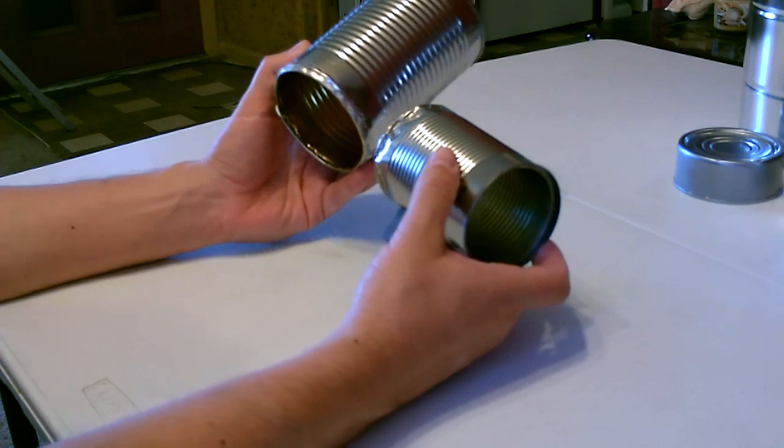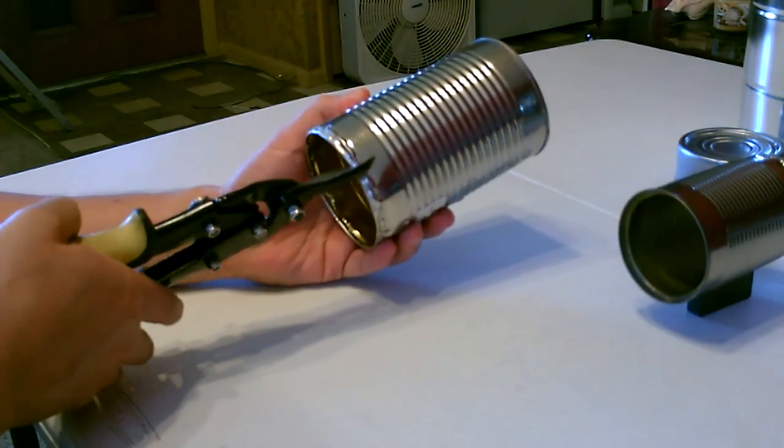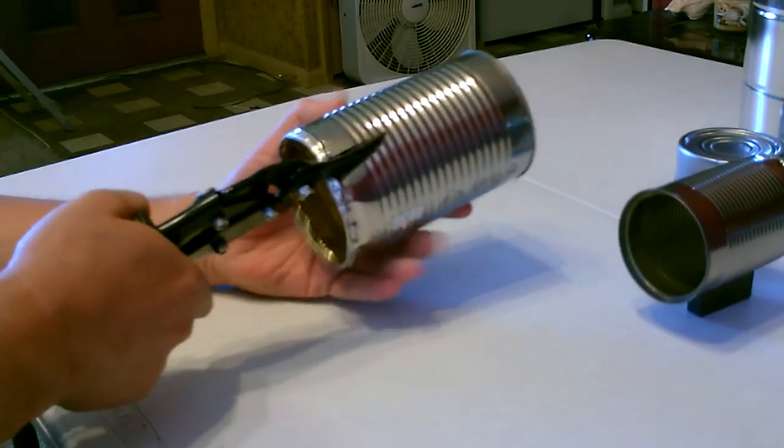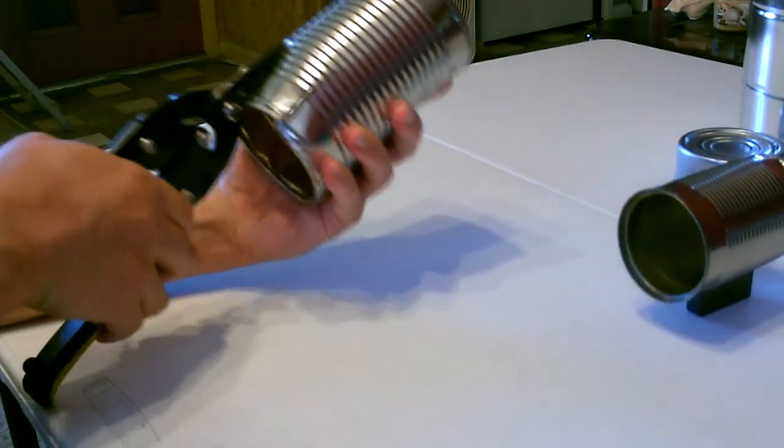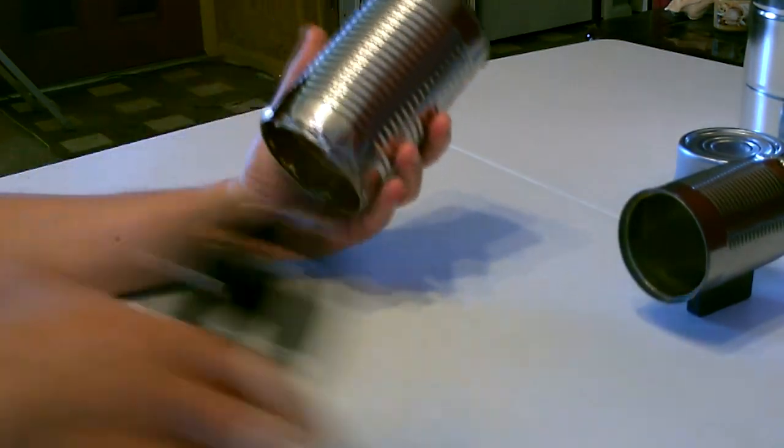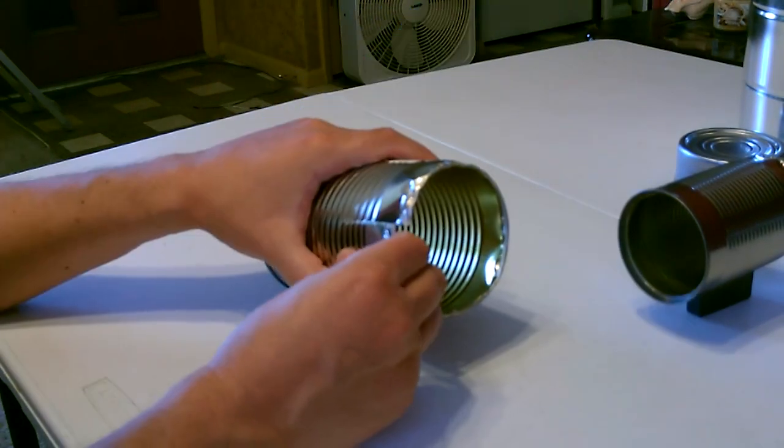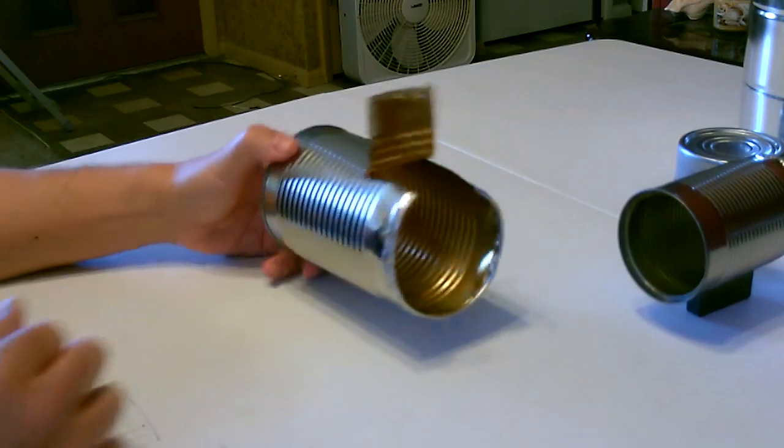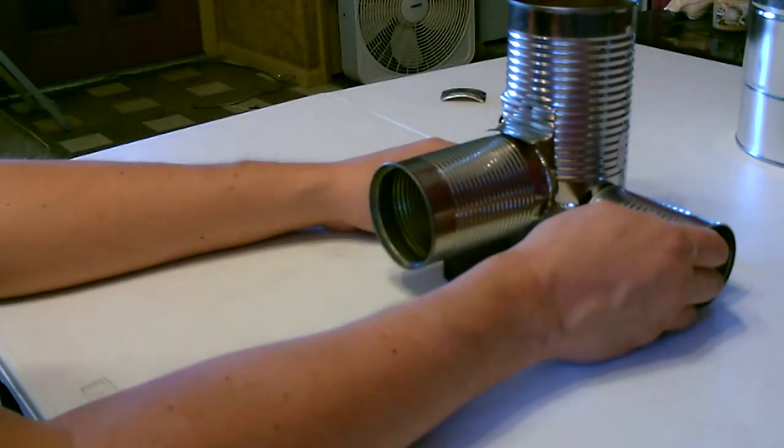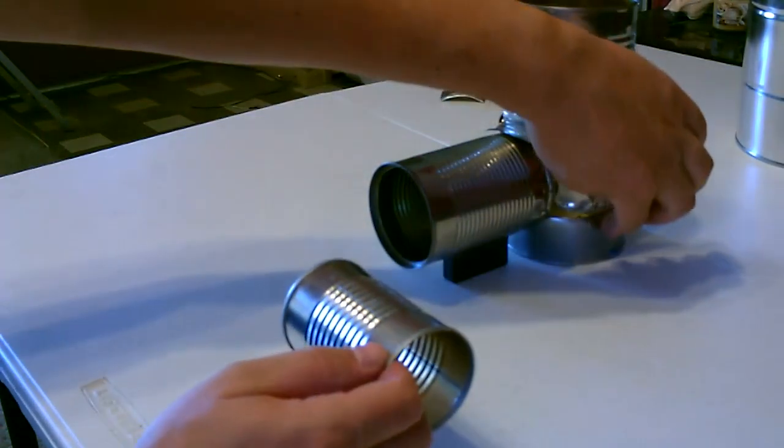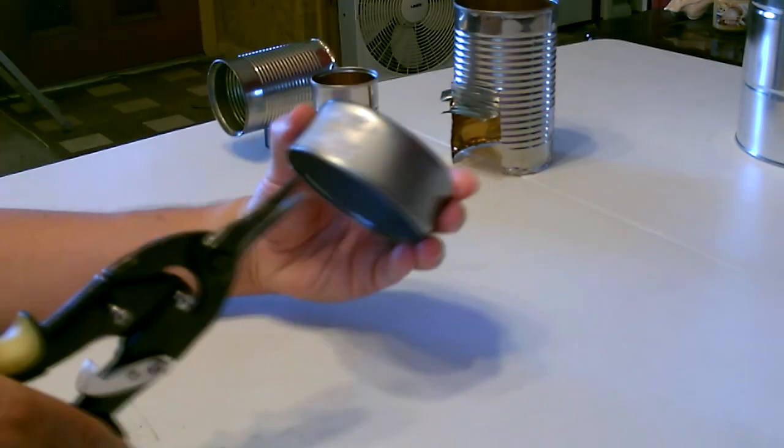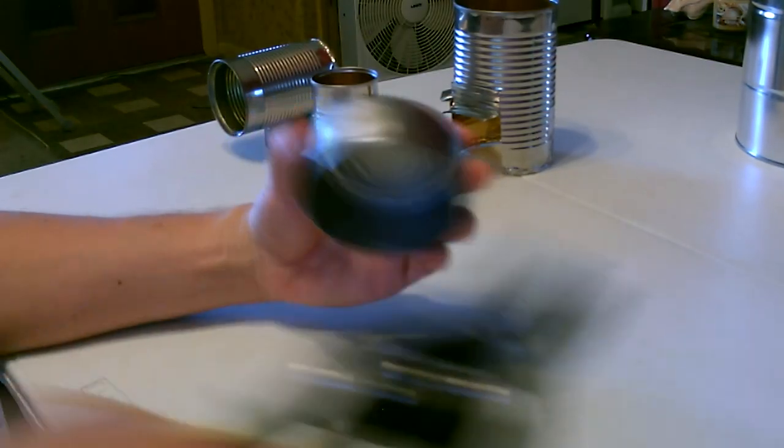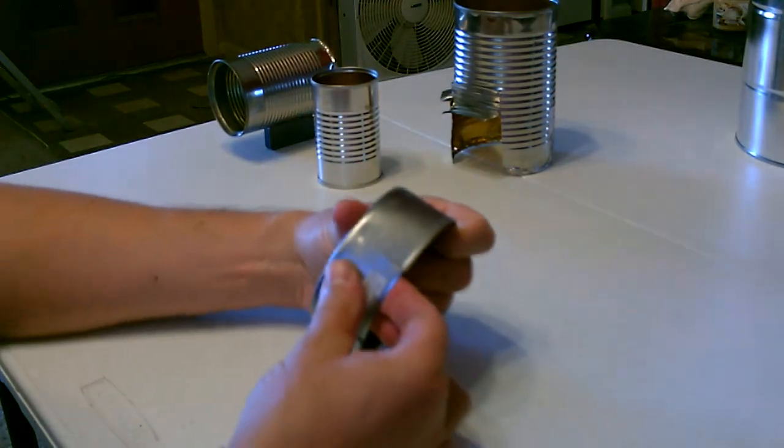So I'm going to start by cutting this can. Now I'm going to go ahead and cut the hole in the side for the air inlet in the tuna can. Then just bend this back.